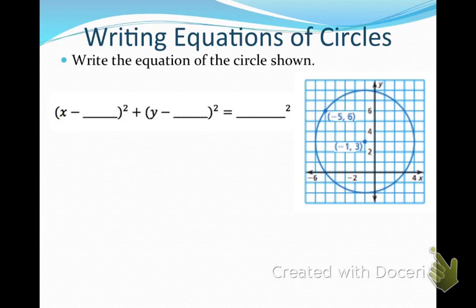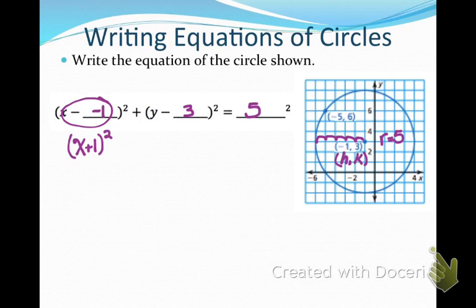Write the equation of this circle. The center h and k is (negative 1, 3), and counting over gives a radius of 5. Plugging in: x minus negative 1 plus y minus 3, with radius 5 squared. Simplifying, x minus negative 1 becomes x plus 1. So if I see x plus 1, that means the x value of my center is negative. The final equation is the quantity x plus 1 squared plus the quantity y minus 3 squared equals 25.